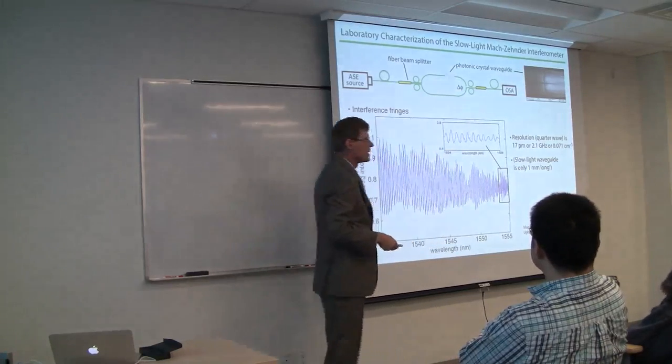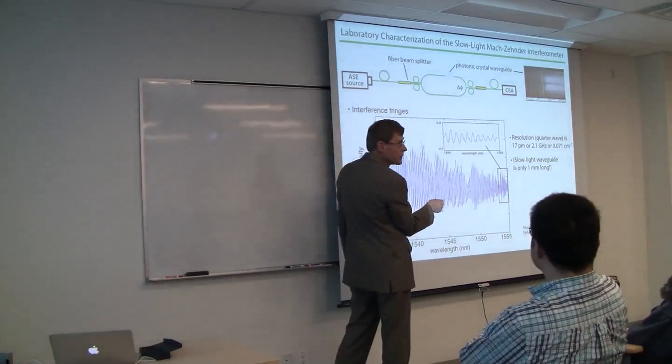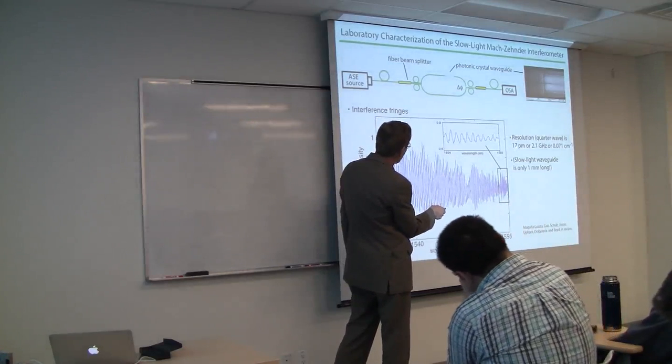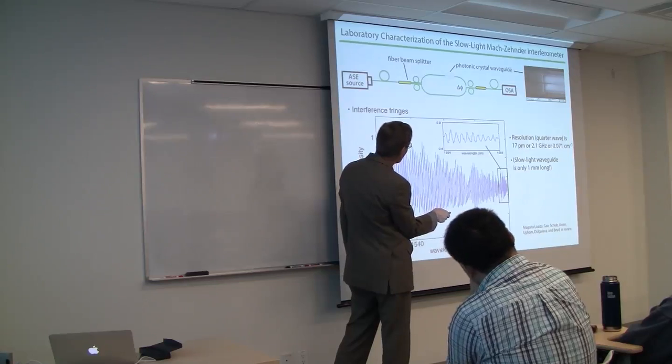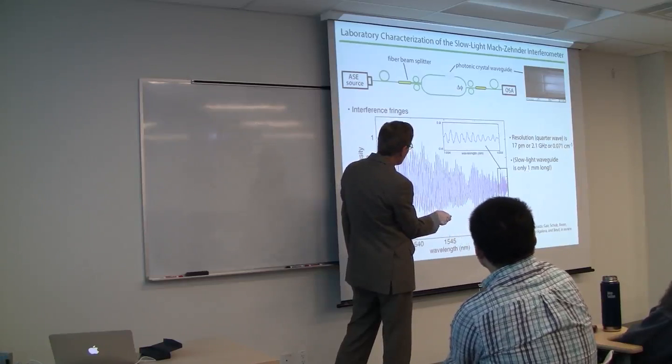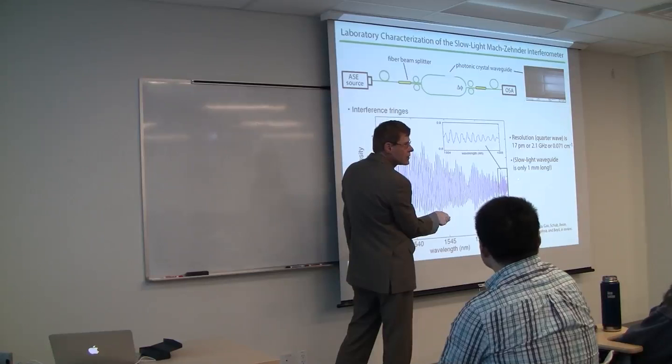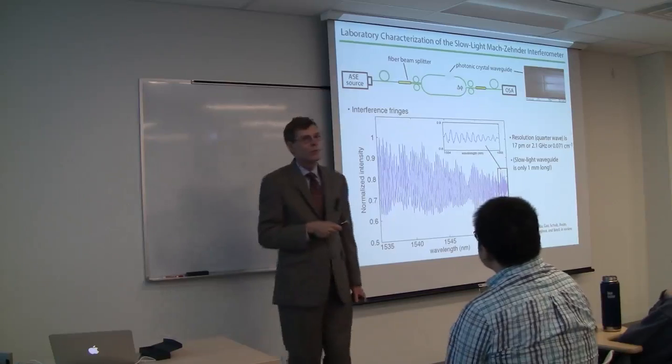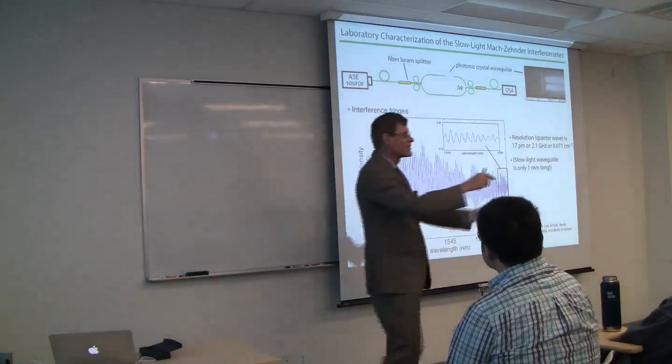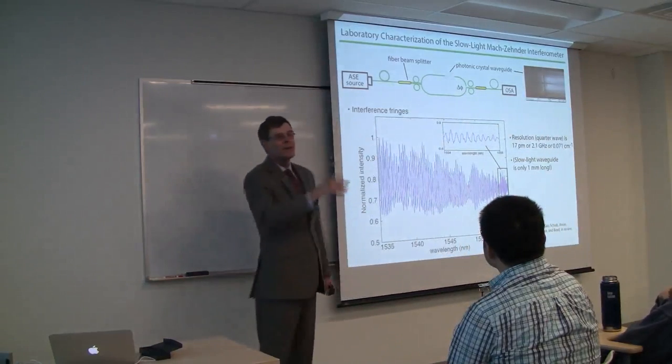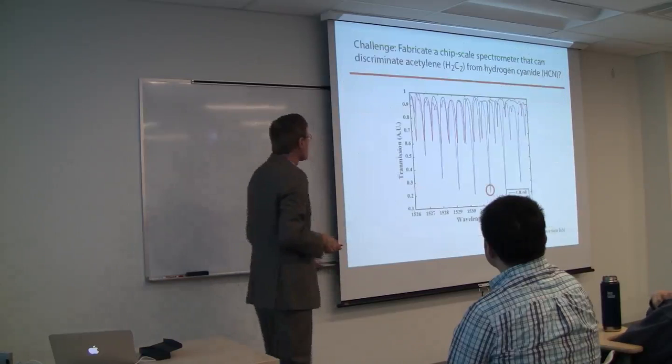Here's the intensity. You get all of these fringes. As you approach the band edge, the fringes become closer and closer together. If you take a measure of the resolution to be one quarter of the period, and quarter wave is a standard criterion, the resolution is 17 picometers or 2.1 gigahertz or 0.071 wavenumbers. Our waveguide was only one millimeter long. Traditional reasoning might say the best you can do is 10 wavenumbers of resolution, but we got more than 100 times better resolution. I'm so happy we were able to pull this one off.